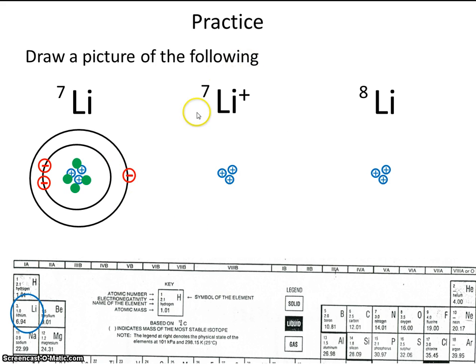Okay. Here, this is a lithium ion. It has a charge of plus one. It still has four neutrons. But what's the difference?